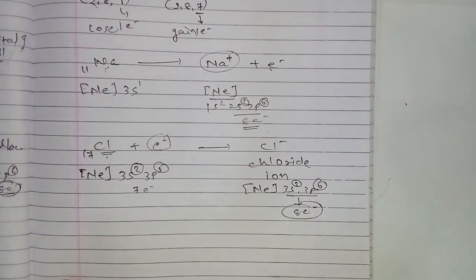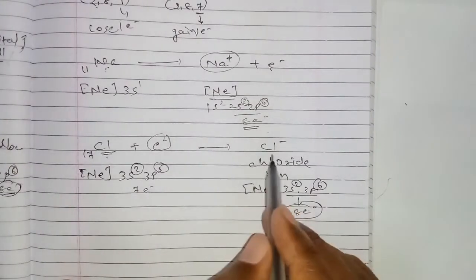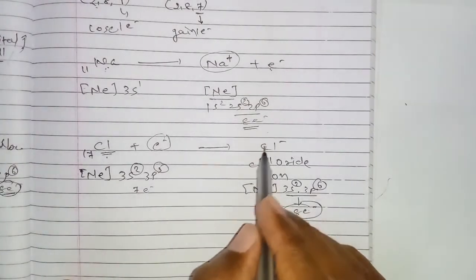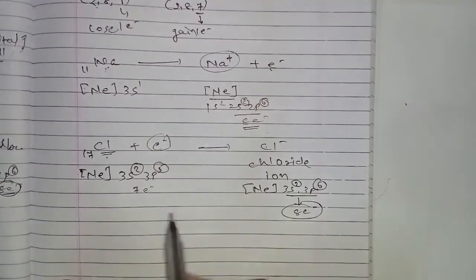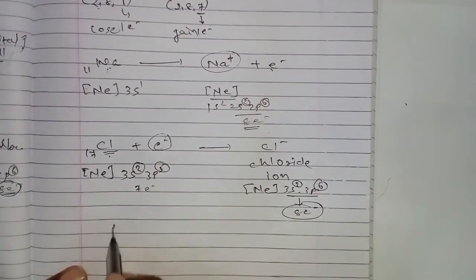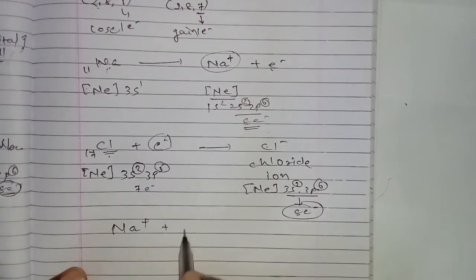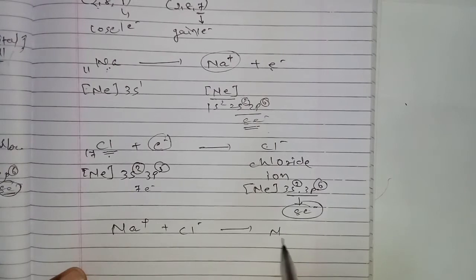Chlorine is converted to the chloride ion with configuration [Ne] 3s² 3p⁶. By gaining one electron it completes its octet. By the transfer of an electron from one atom to another, an electrovalent bond — or ionic bond — is formed between sodium ion and chloride ion.